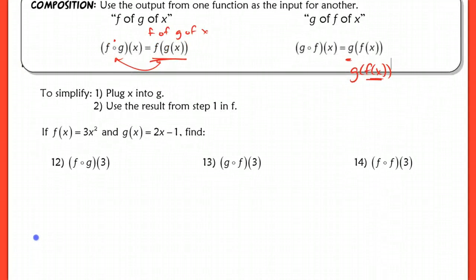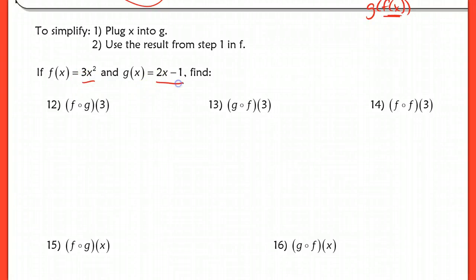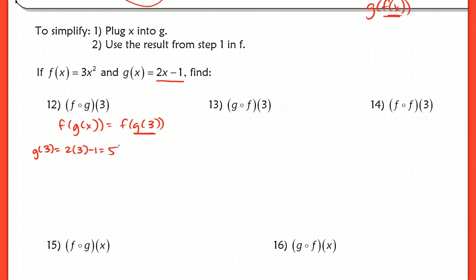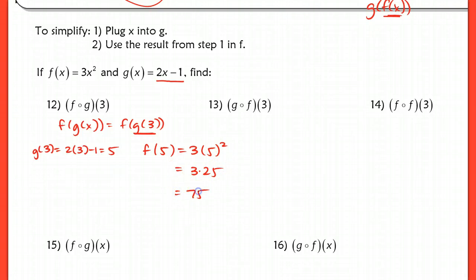Here I've got two functions: f of x is 3x squared, and g of x is 2x minus 1. In the first example, f with the open circle g of 3 means f of g of 3 — I'm using g of 3 as my input for f. First, calculate g of 3: that's 2 times 3 minus 1, which gives 5. Now plug 5 into f: f of 5 is 3 times 5 squared, which is 3 times 25, giving 75. So f of g of 3 is equal to 75.